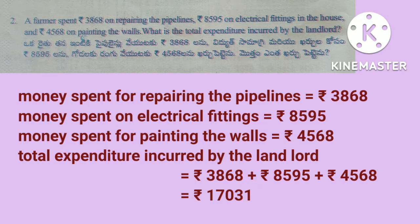Solution: Money spent for repairing the pipelines is Rs. 3,868. Money spent on electrical fittings is Rs. 8,595. Money spent for painting the walls is Rs. 4,568. Therefore, total expenditure is 3,868 plus 8,595 plus 4,568, that is equals to Rs. 17,031.